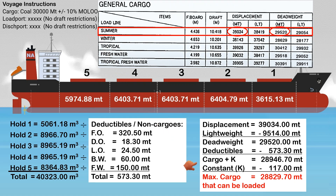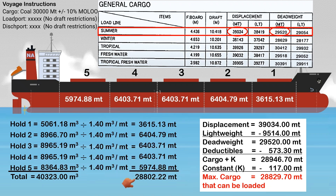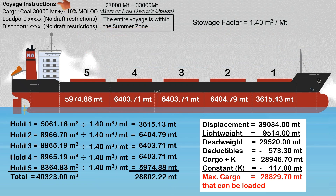We can determine the actual constant of the ship during the initial draft survey. Subtracting our non-cargos gives us cargo and constant, and by subtracting the constant, we can find the maximum cargo the ship can carry when floating at her summer draft. Looking at the full capacity of our cargo holds and the maximum cargo that the ship can load at her summer draft, we can carry this total amount of cargo in compliance with load line restrictions, and have also complied with the stated 30,000 metric tons plus or minus 10% from the voyage instructions.